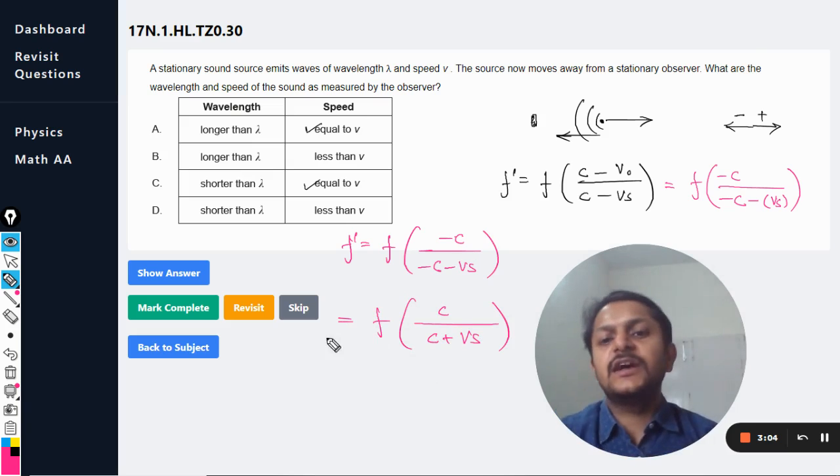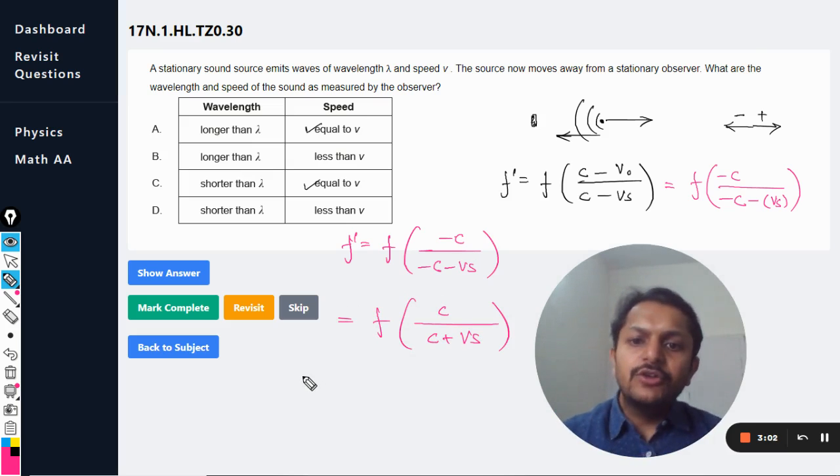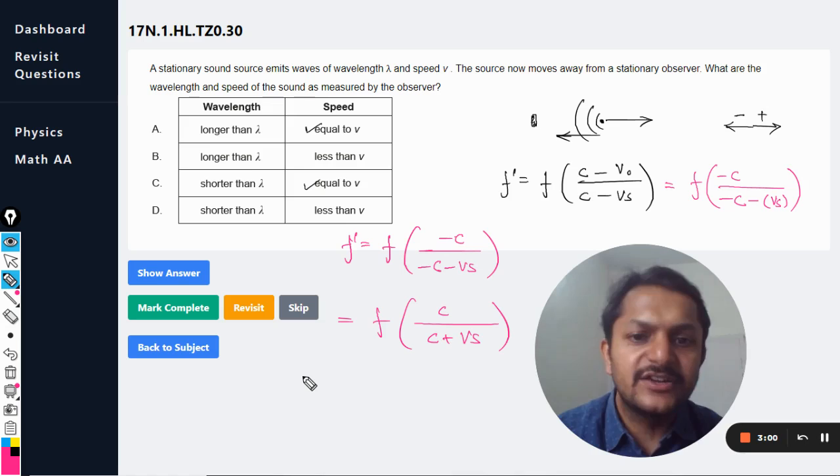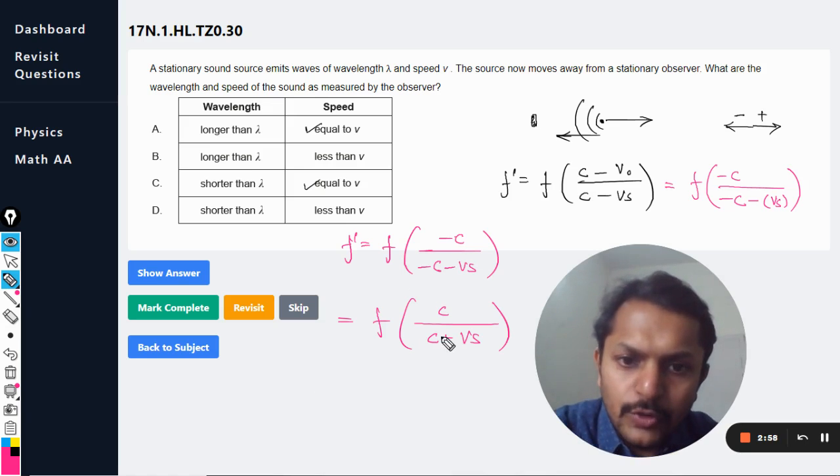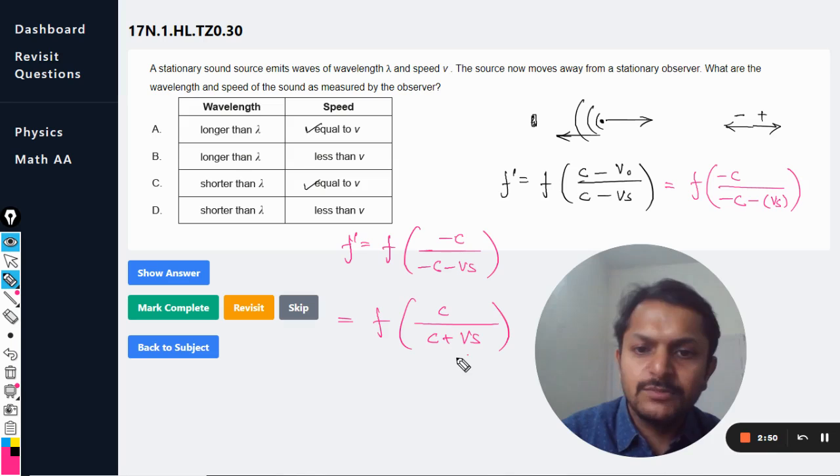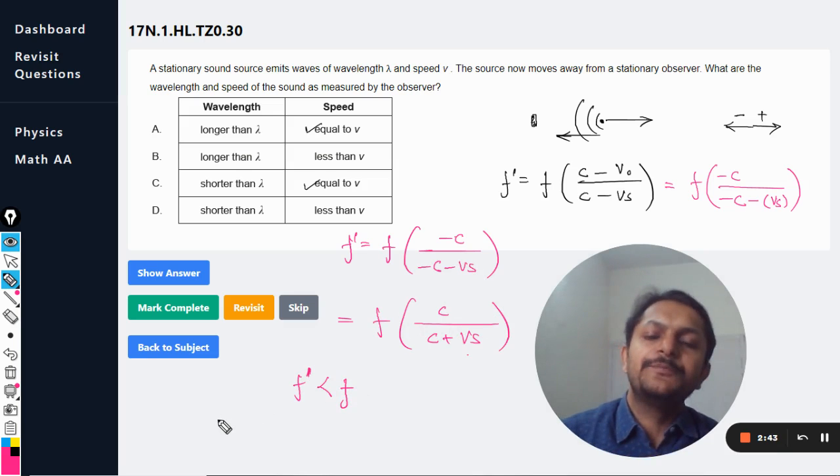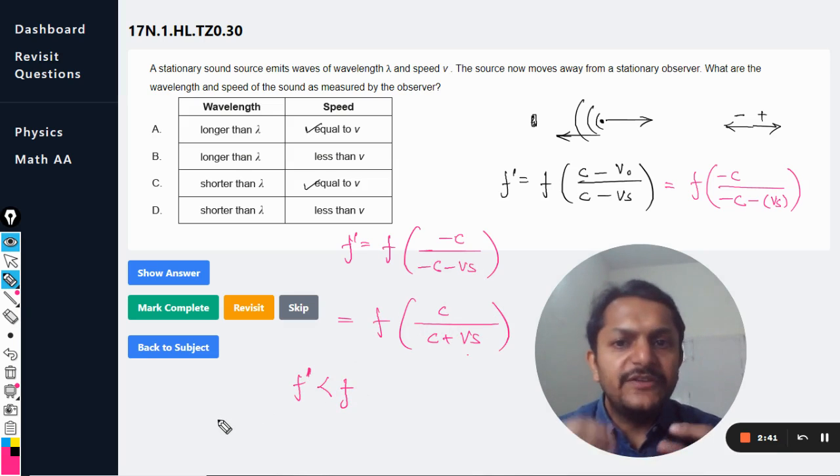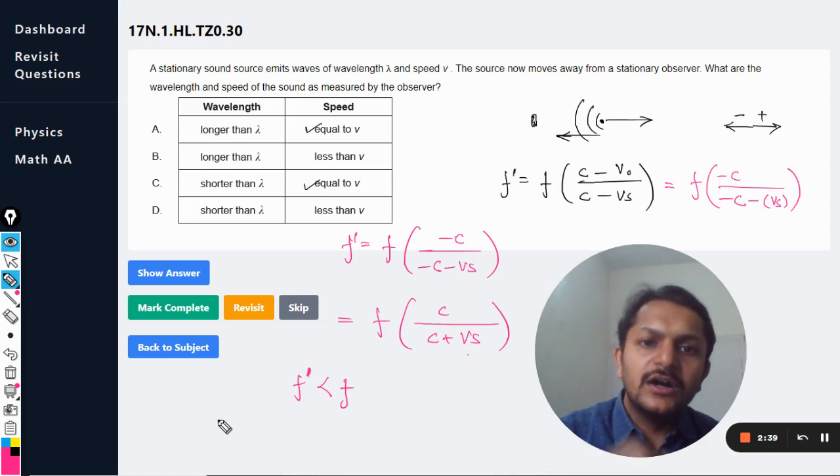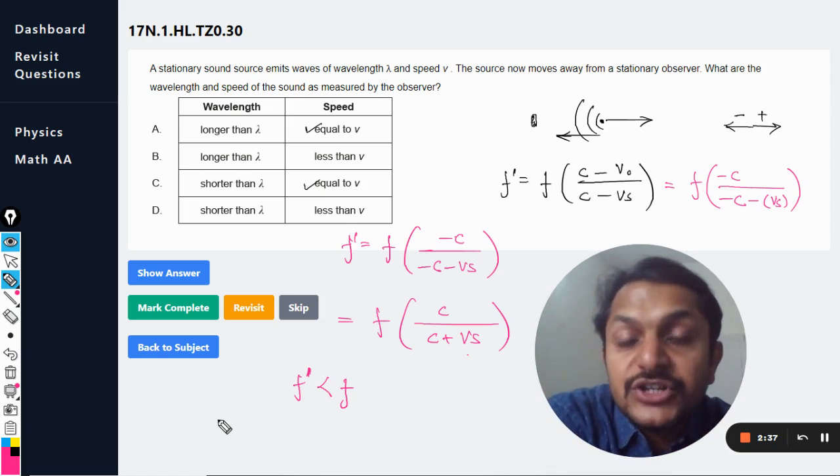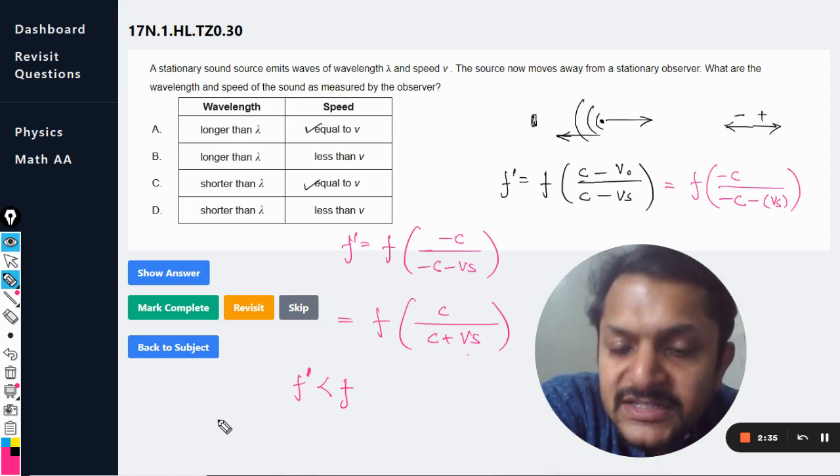So this is our final equation. Now you can see whether the frequency is increasing or decreasing. The denominator is more than the numerator because c + v_s is more, so this is less than one. It means that f' will be less than the frequency. So the frequency that would be heard by the observer will be less than the original frequency.